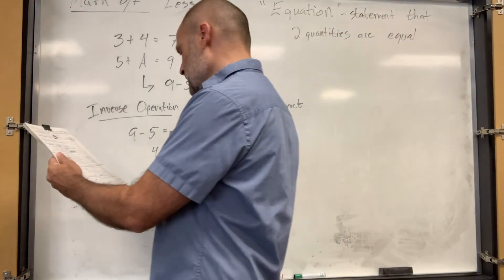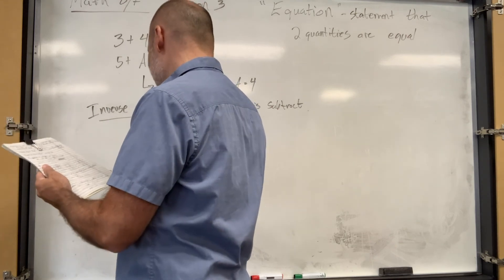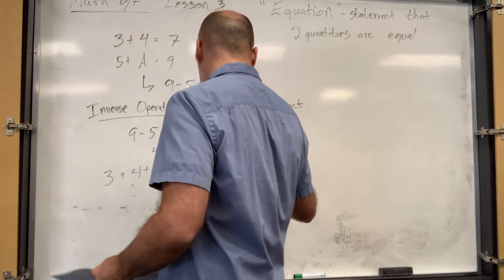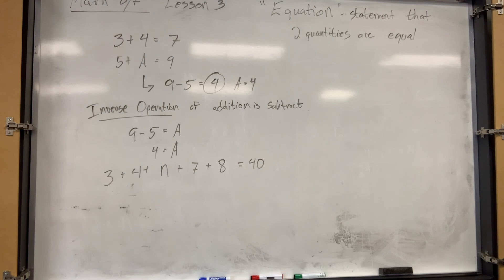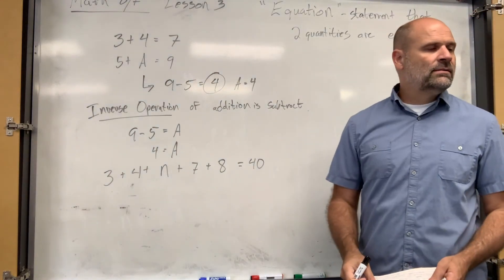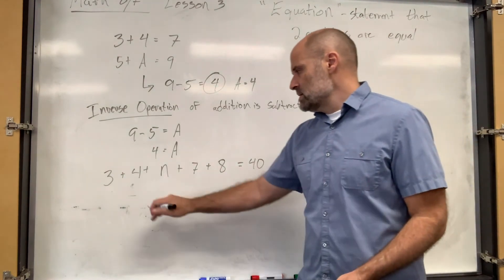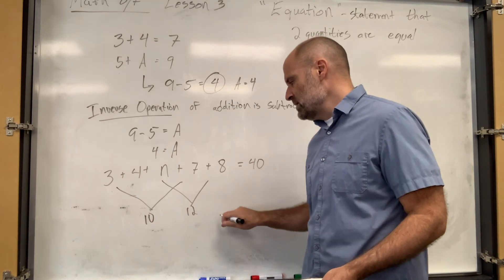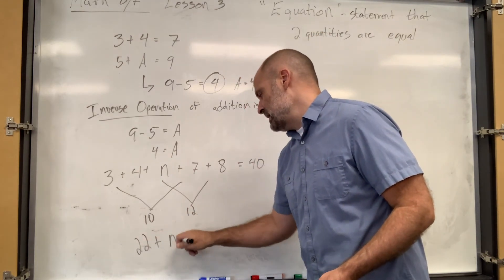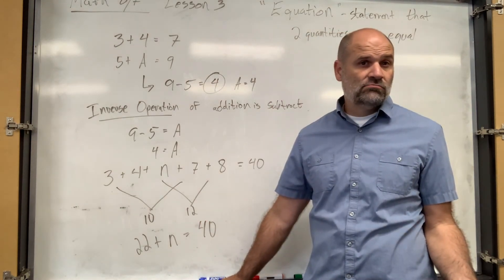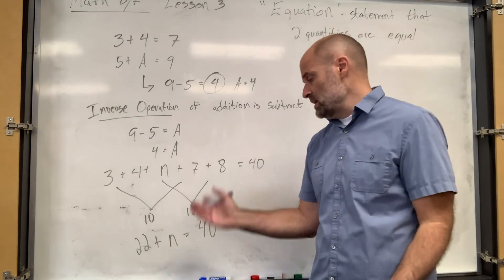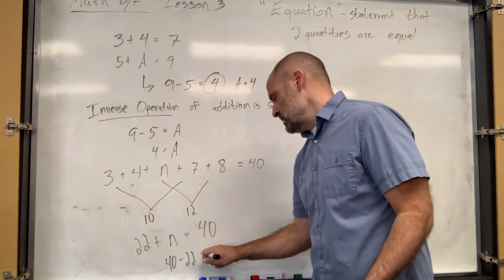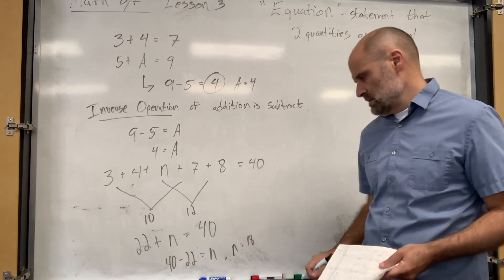Let's get a little more complicated. Let's say: three plus four plus n plus seven plus eight equals 40. Can you figure out what n is? You add all the other ones together and subtract from 40 because all of it has to add up to 40. I like to find tens: there's 10 plus 12, so that's 22. So 22 plus n equals 40. Then we invert it: 40 minus 22 equals n, so n equals 18. Good job.